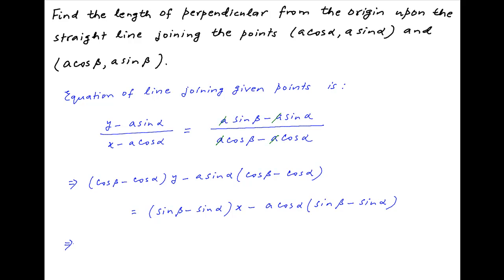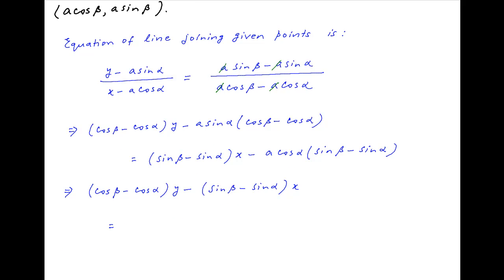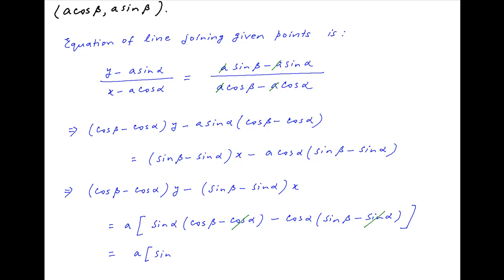This can be rearranged as (cos β minus cos α)·y minus sin α·x is equal to a times [sin α times (cos β minus cos α) minus cos α times (sin β minus sin α)]. On the right hand side, sin α·cos α cancels, and the right hand side simplifies to a times (sin α·cos β minus cos α·sin β), which is equal to a·sin(α minus β).